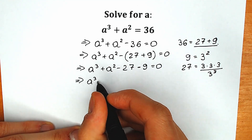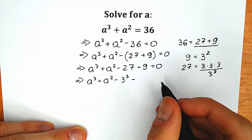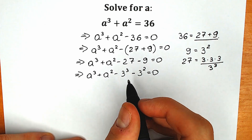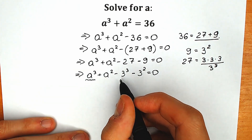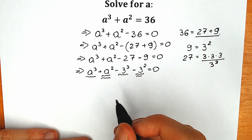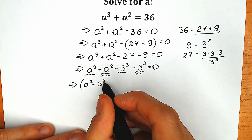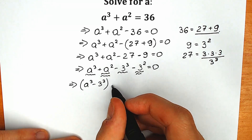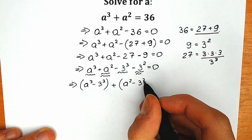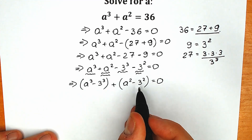So we have a cube plus a square minus 27. We're going to write 3 cubed, and minus, instead of 9, we're going to write 3 squared, equal to 0. What we're going to do next: let's group. We have a cube and 3 cube here, a square and 3 square here. So we can easily group squares and cubes. Let's do this right now.